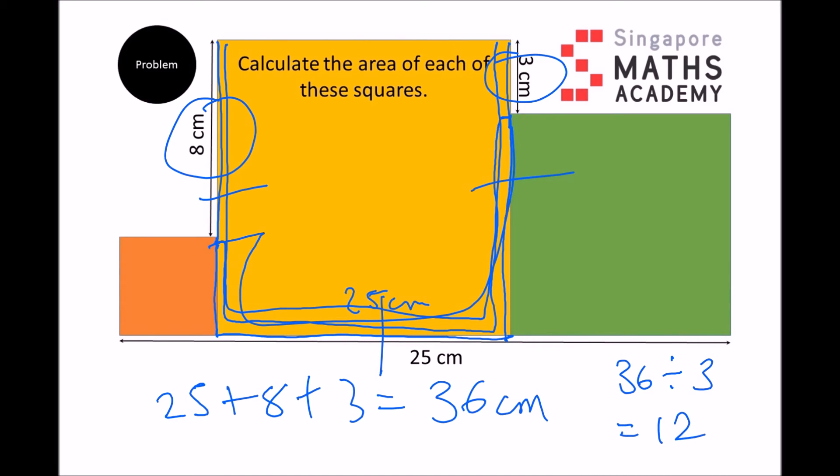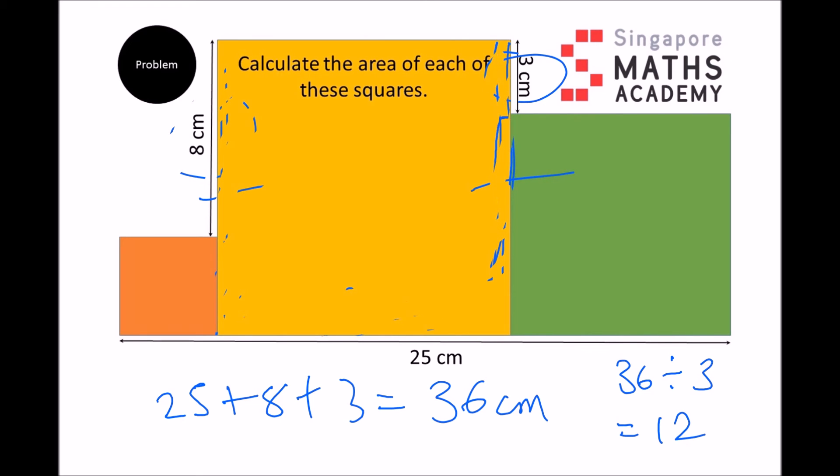And therefore, if we try to look at that in a different way now, let's get rid of all of this marking so it's a bit clearer for us. If we think about that, that means each of the lengths for the large square is going to be 12cm.